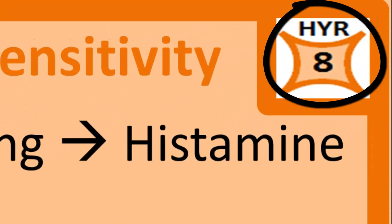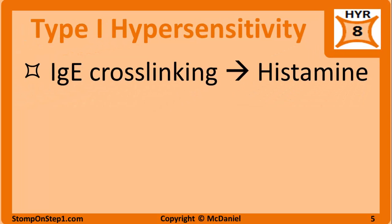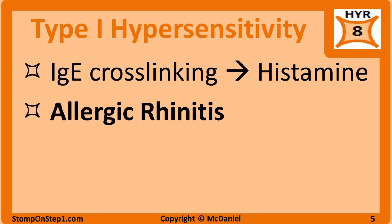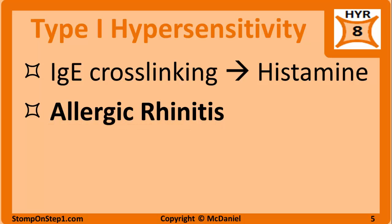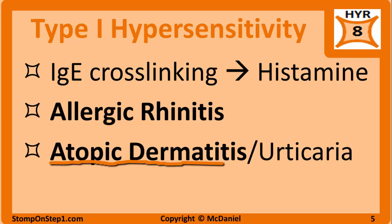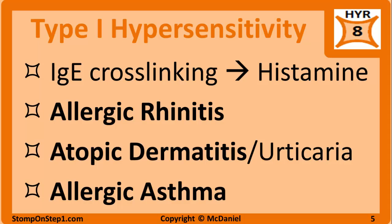Type 1 hypersensitivity is the most important type we're discussing and receives a high yield rating of 8 out of 10 for the USMLE Step 1 exam. It leads to various allergies ranging from mild allergic rhinitis — causing coughing, sneezing, watery eyes, and nasal congestion — to atopic dermatitis, which causes hives or eczema that is red, raised, and very itchy. It can also trigger exacerbation of allergic asthma through environmental triggers.